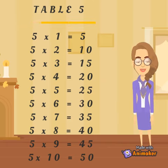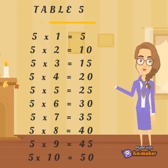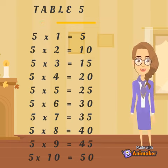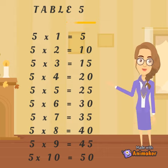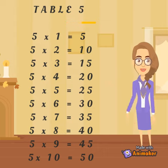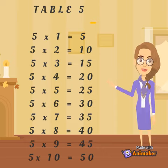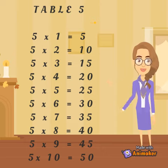5 6s are 30. 5 7s are 35. 5 8s are 40. 5 9s are 45. 5 10s are 50.